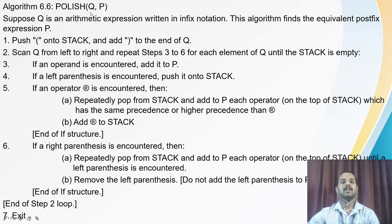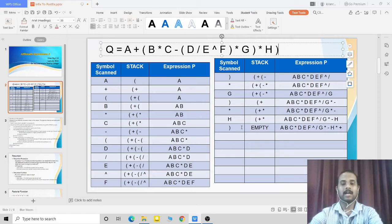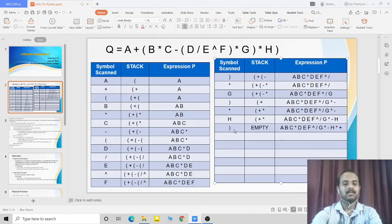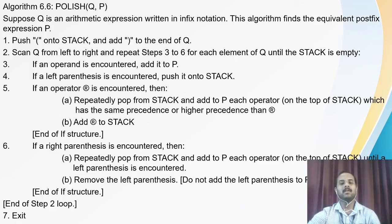Here is the algorithm for infix to postfix, where Q is the original infix expression and P is the postfix expression. First, push the opening parenthesis to the top of the stack and add the closing parenthesis to the end of the infix expression Q. Then scan the infix expression from left to right until the stack becomes empty. If an operand is encountered, directly add it to P. If a left parenthesis is encountered, directly push it into the stack.